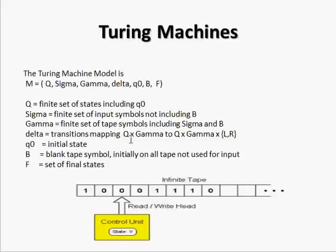Sigma is the finite set of input symbols not including B or blank. Gamma is the finite set of tape symbols including Sigma and delta.